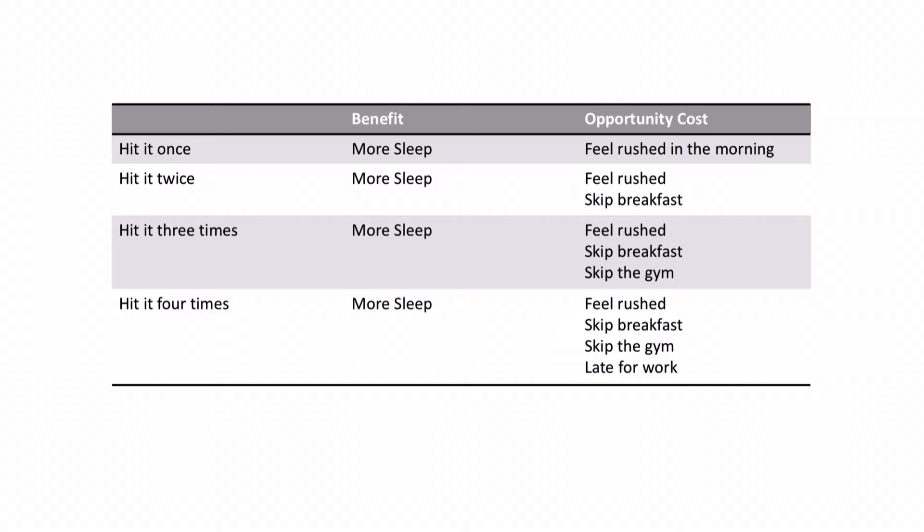So if we hit the snooze button once, we sleep a little bit more — that's the benefit of hitting the snooze button — but we feel a little bit rushed in the morning. Ten minutes goes by, the alarm goes off again. The benefit of hitting the snooze button one more time is a little bit more sleep, but now the opportunity cost of hitting the snooze button twice is that we feel rushed in the morning and we also have to skip breakfast.